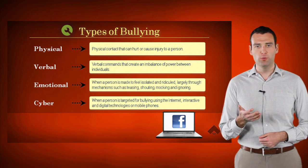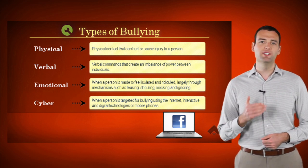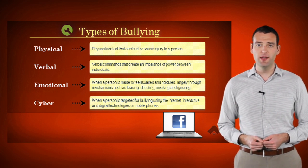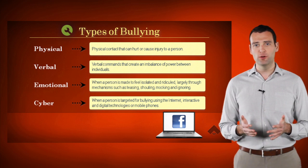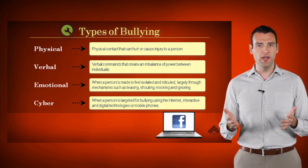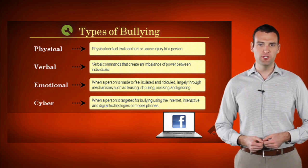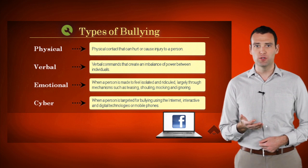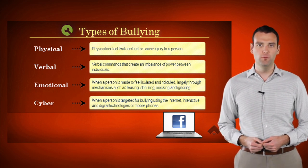Cyberbullying comes in two types: direct attacks, which are messages sent directly to others, and by proxy, when the bully uses others to help cyberbully the victim — with or without their knowledge. Examples include text messages, pictures, instant messages, email, and voicemail.